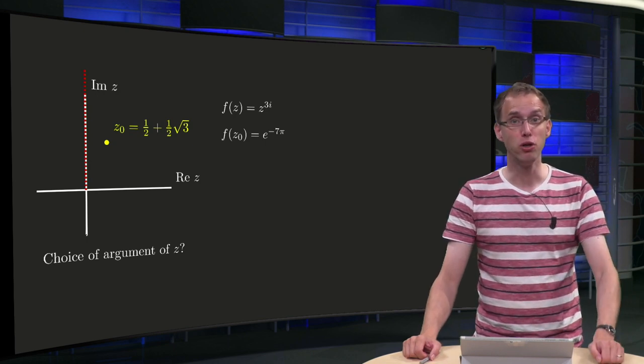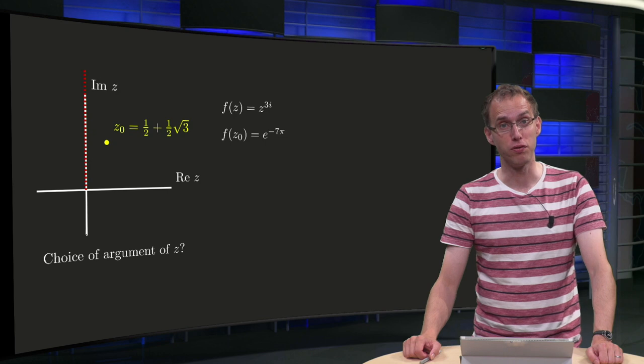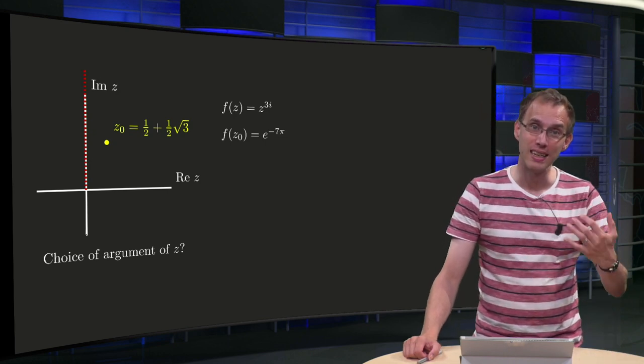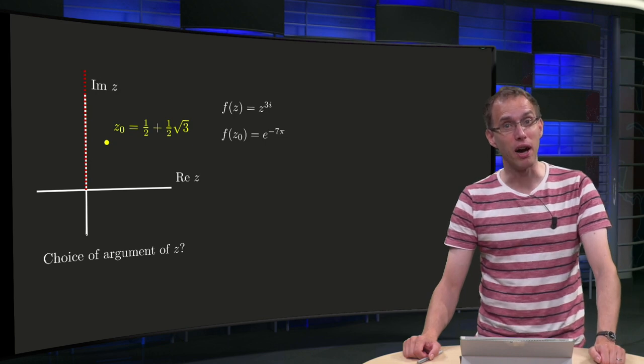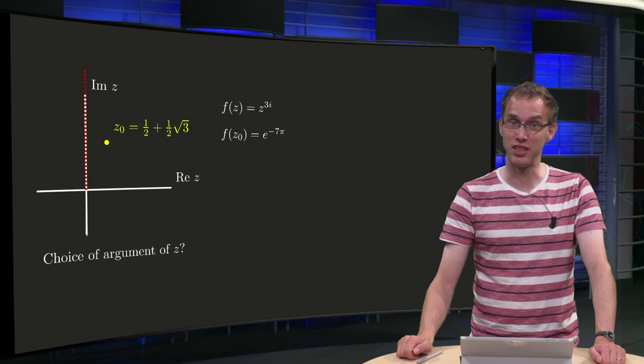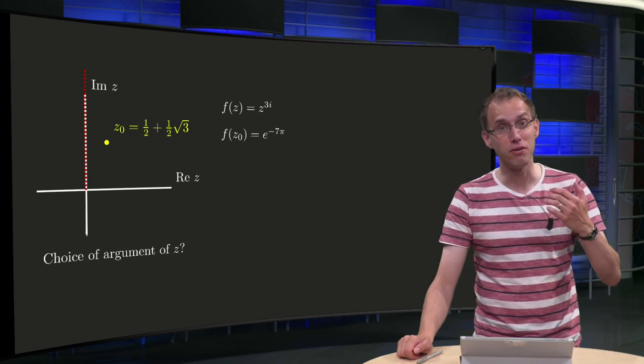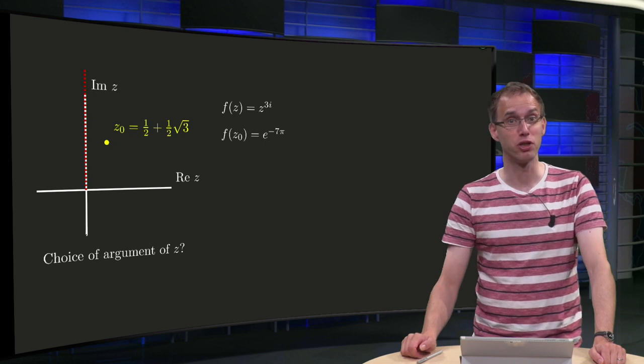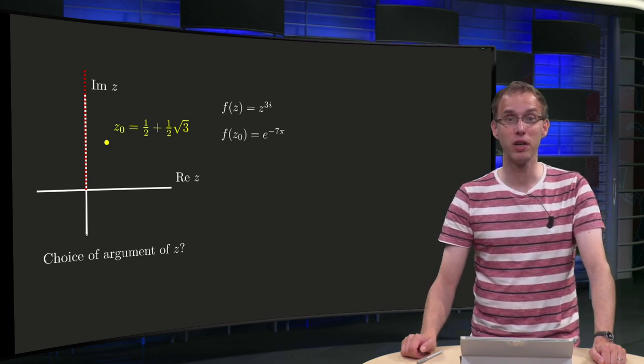So usually you pick your branch first and then you compute your function values. In this exercise we have done it the other way around, we have given a function value for f and z0 and now you need to find which branch we chose. So try to find this branch yourself first and then see in this video whether you did it correctly.